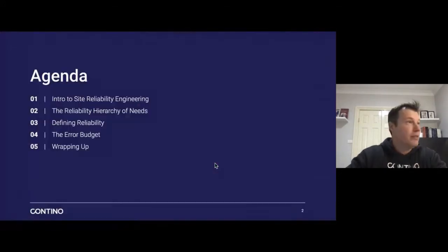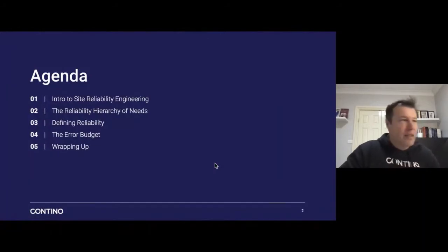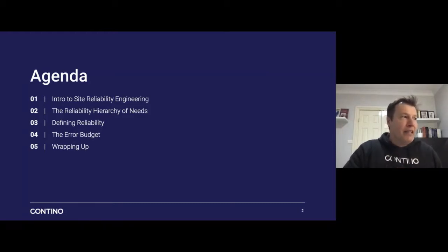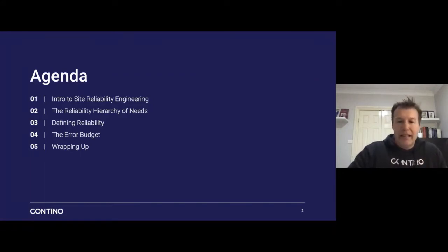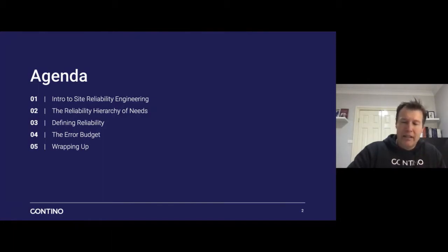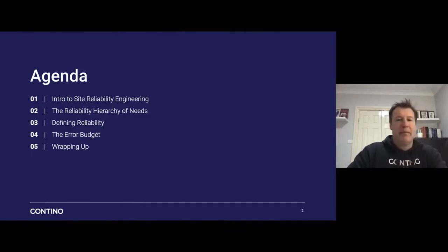So let's talk around what the hell is SRE? The agenda: I'm going to go into site reliability engineering and talk a bit around the hierarchy of needs. I wanted to define reliability because I think that's a key aspect — without that, you can't have things like observability. A lot of people come around the concept of error budget, but hopefully I can bring a bit of a slant on it, an introduction around why it's important and how to go about it. And then a bit of a wrap-up at the end.